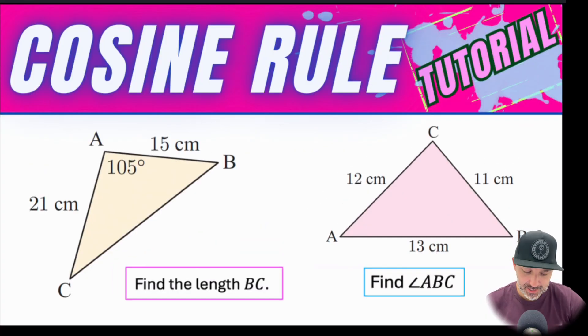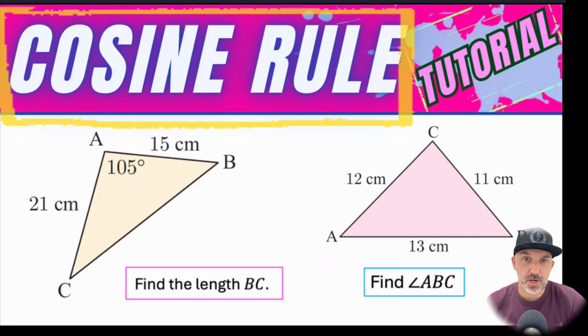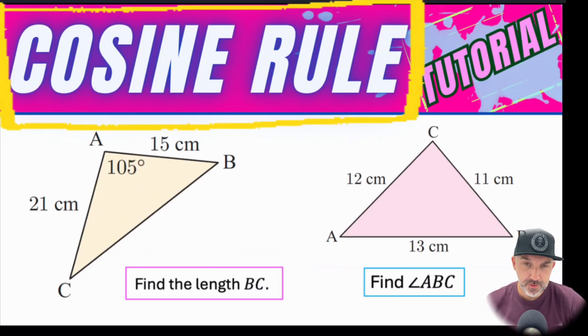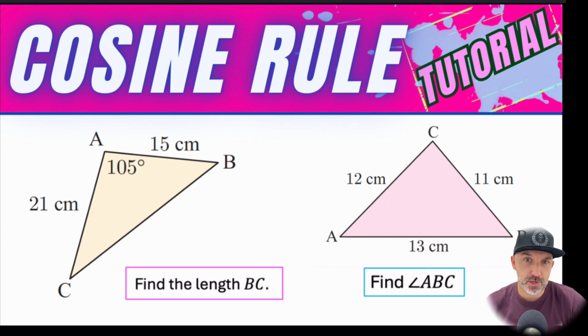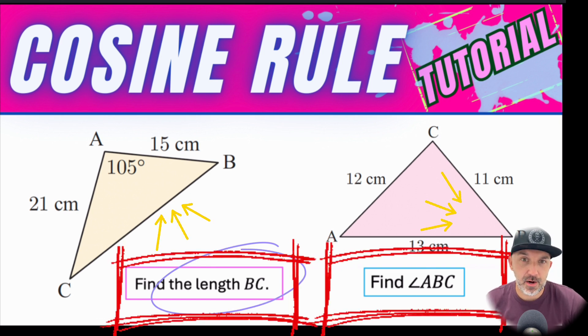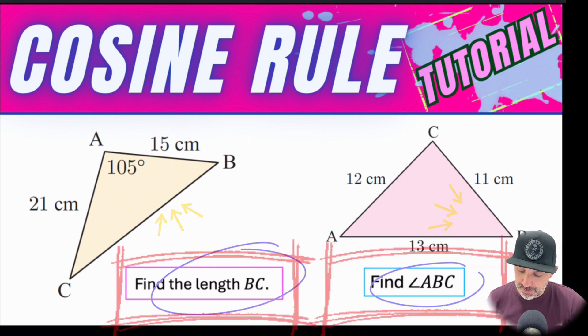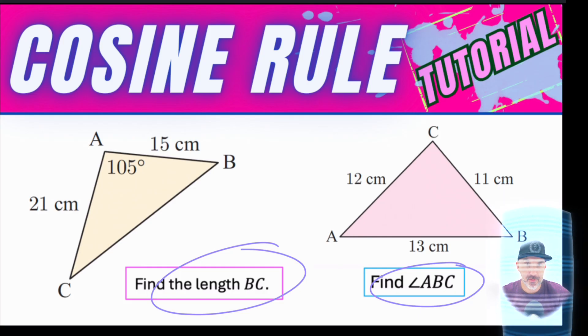Welcome back everybody, I'm Dave and today we are going to go through the cosine rule. I'm going to talk briefly about how I know to use cosine rule, what the formula looks like and how we can set up the problem. In these two examples I'm going to go through how to find a missing length or finding a missing angle depending on the problem. Let's dive in.